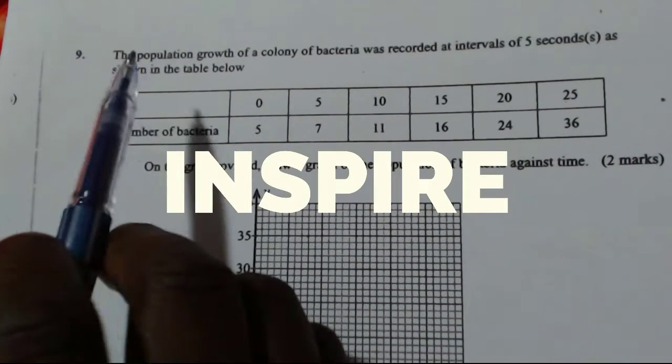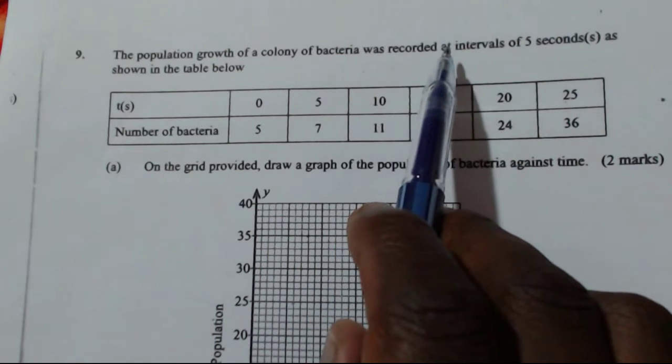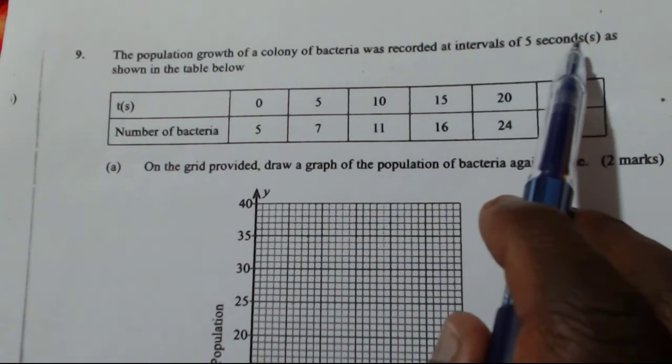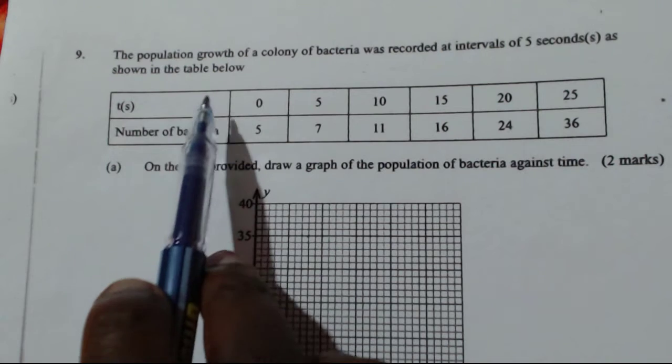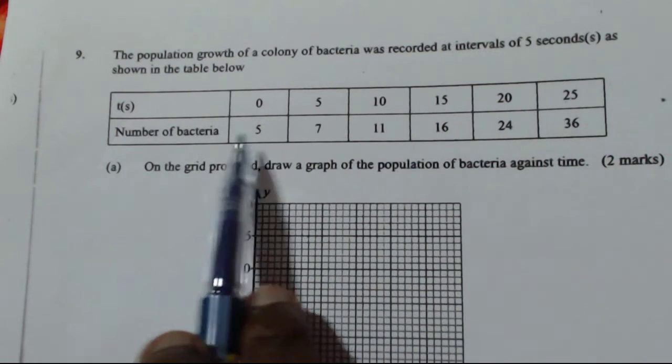Question number nine. The population growth of a colony of bacteria was recorded at intervals of five seconds as shown in the table below. So here we have time in seconds from zero to twenty-five, then the number of bacteria.